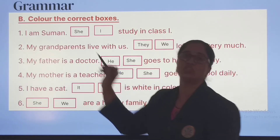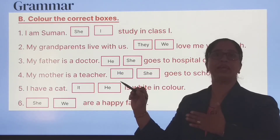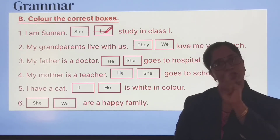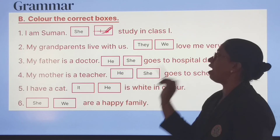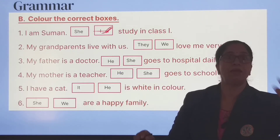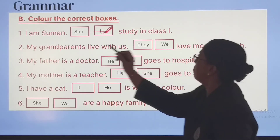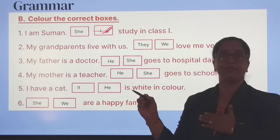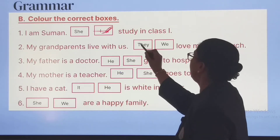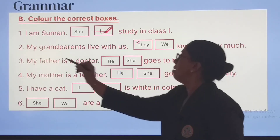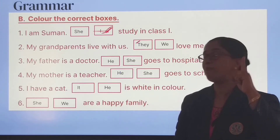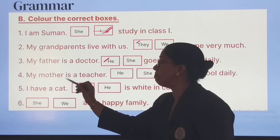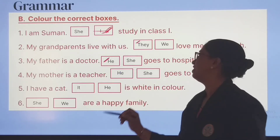Now the last exercise — you have to color the correct box. It says I am Sumen, I study in class one, so you will color the box for I. My grandparents — grandfather and grandmother, more than one — live with us; they love me very much, so you color they. My father is a man, and for a man we use he — He goes to hospital. My mother is a teacher; mother is a woman, so we color she.